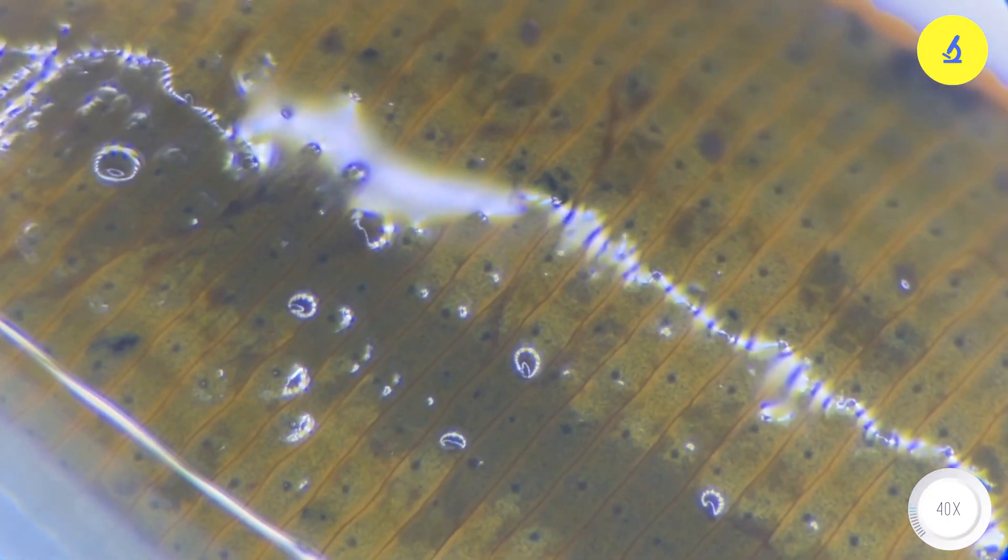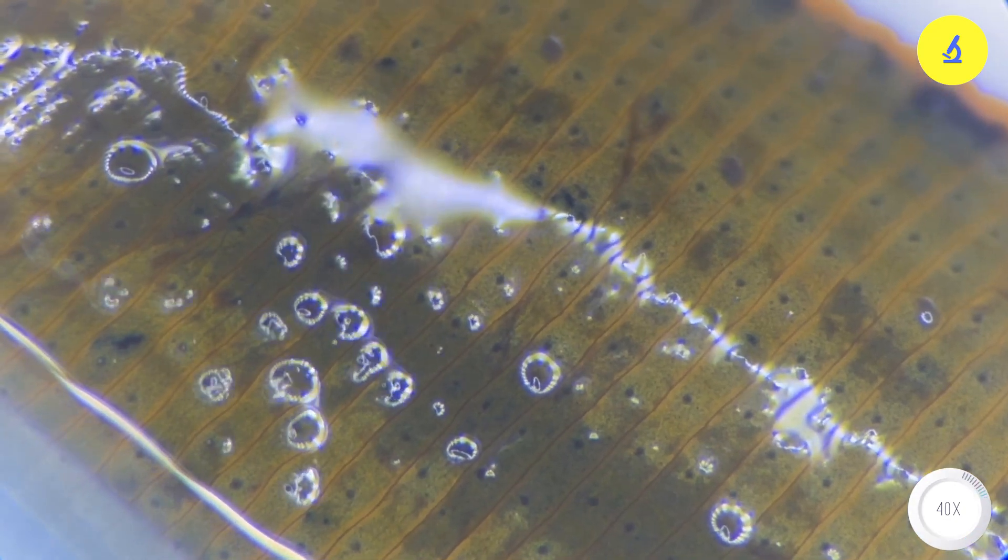It lives in stagnant water areas, ponds, rivers, and streams, and hides in roadside grass. Leeches are present almost everywhere in the world.